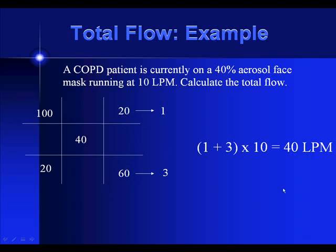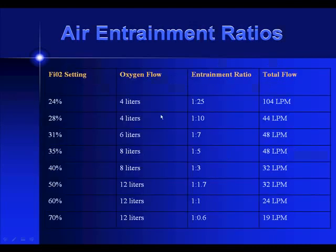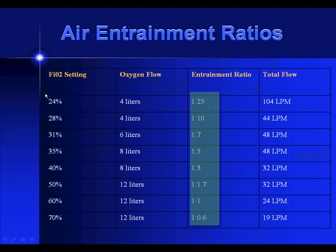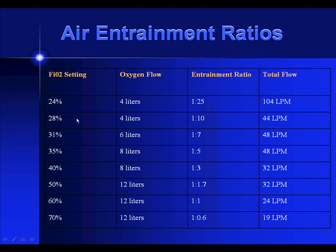The magic box provides an accurate air entrainment flow ratio. However, there's another method using established air entrainment ratios based on the FiO2 that can get you very close to the answer. If you memorize these, they're a quick shortcut: 24% is 1 to 25, 28% is 1 to 10, 31% is 1 to 7, 35% is 1 to 5, 40% is 1 to 3, 50% is 1 to 1.7, 60% is 1 to 1, and 70% is 1 to 0.6. If you memorize these FiO2-to-ratio relationships, you could likely do away with the magic box and still get the correct answer.